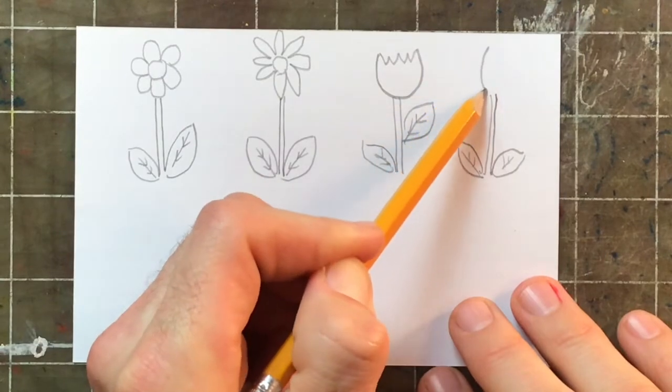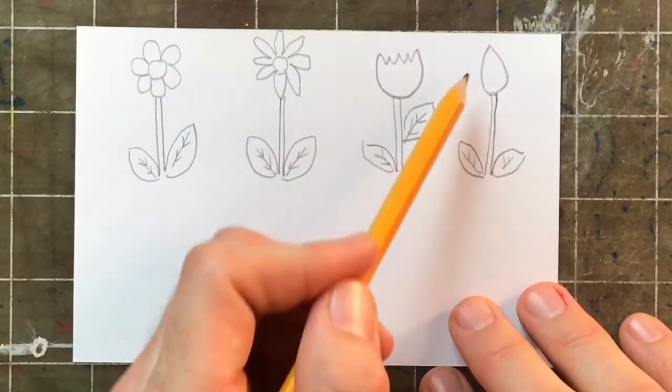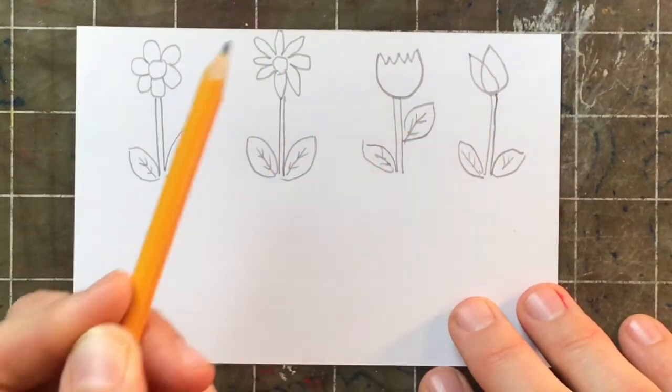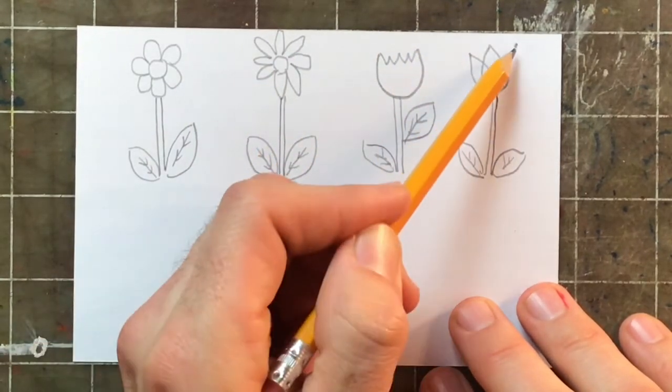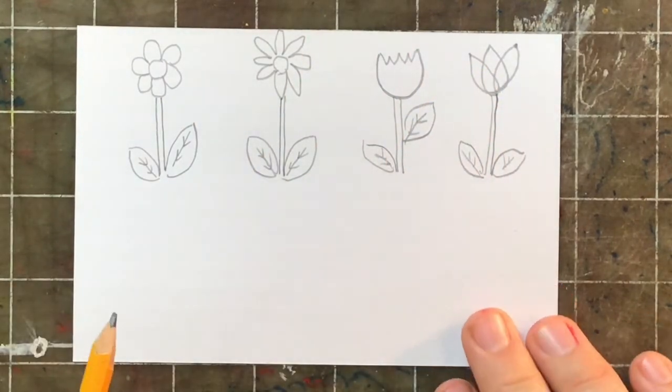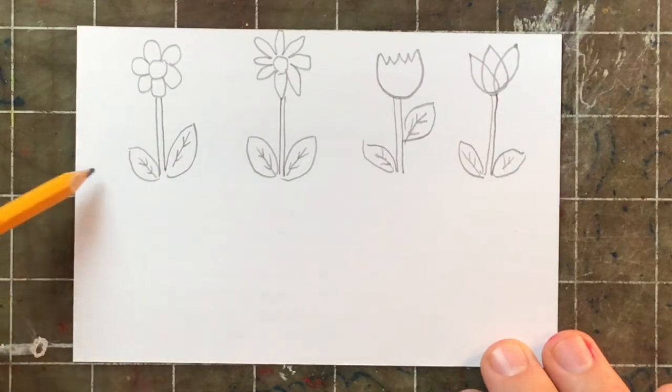And then the last one, I'm going to use a teardrop shape. But I'm going to do it three times. This is number two, and it's going to cross over the first one. And then the third one, I'll put a little dot there. Curvy line, curvy line. There we go. I've got four different types of flowers.